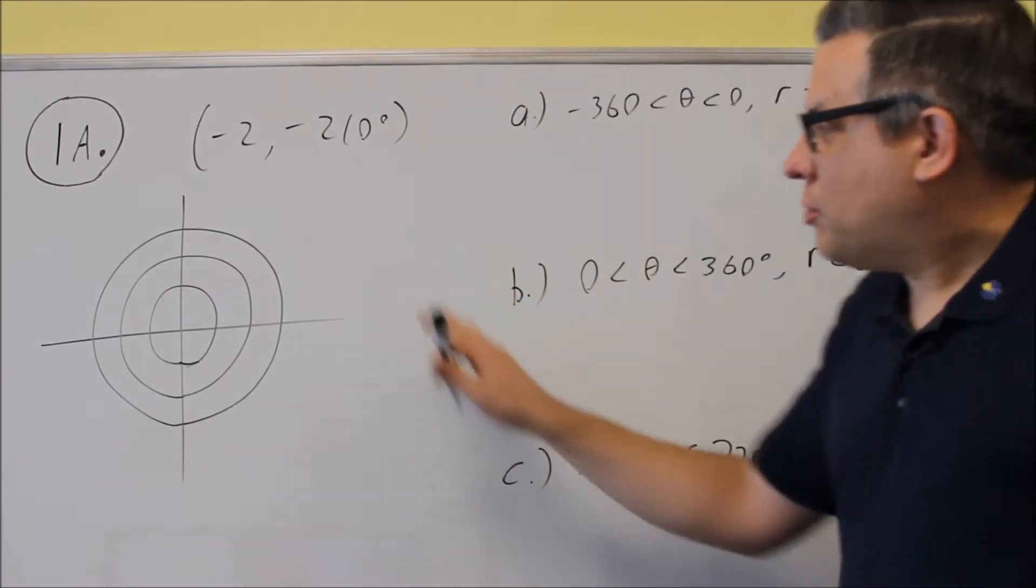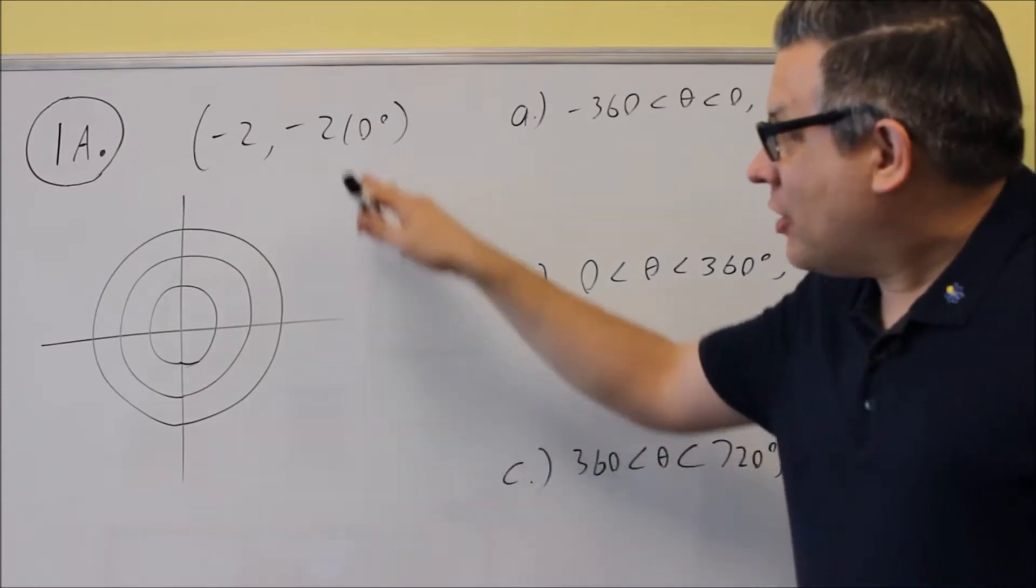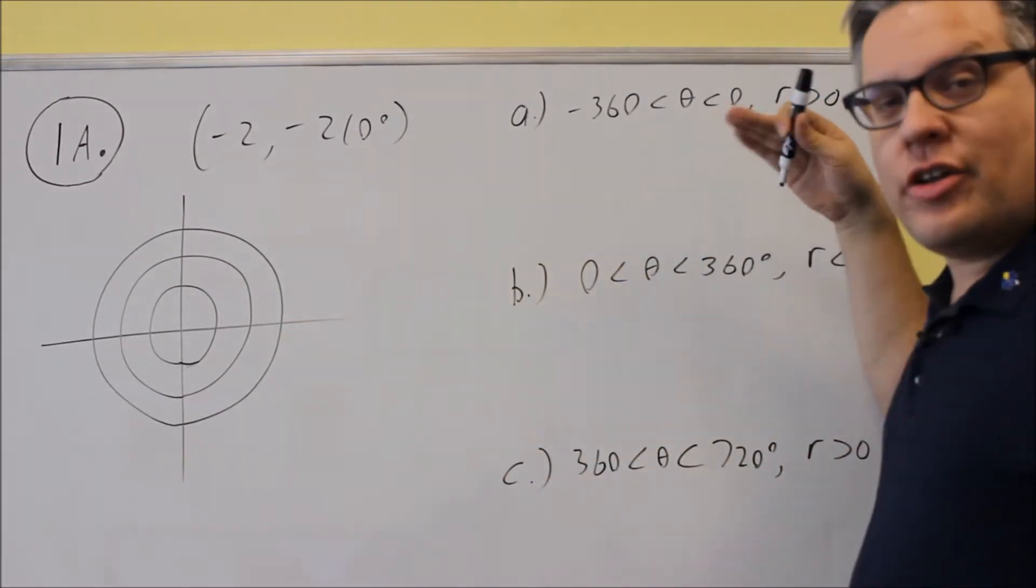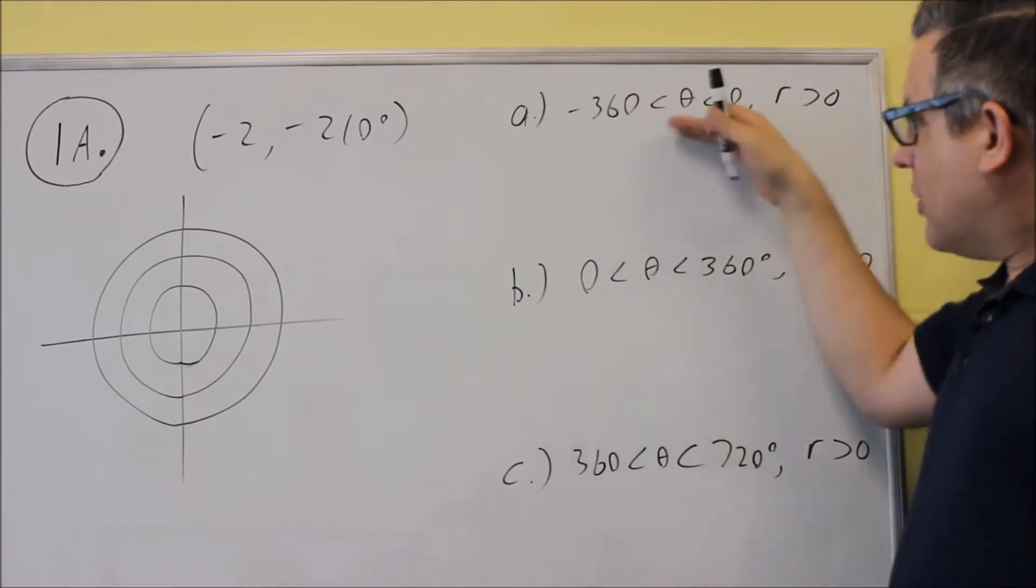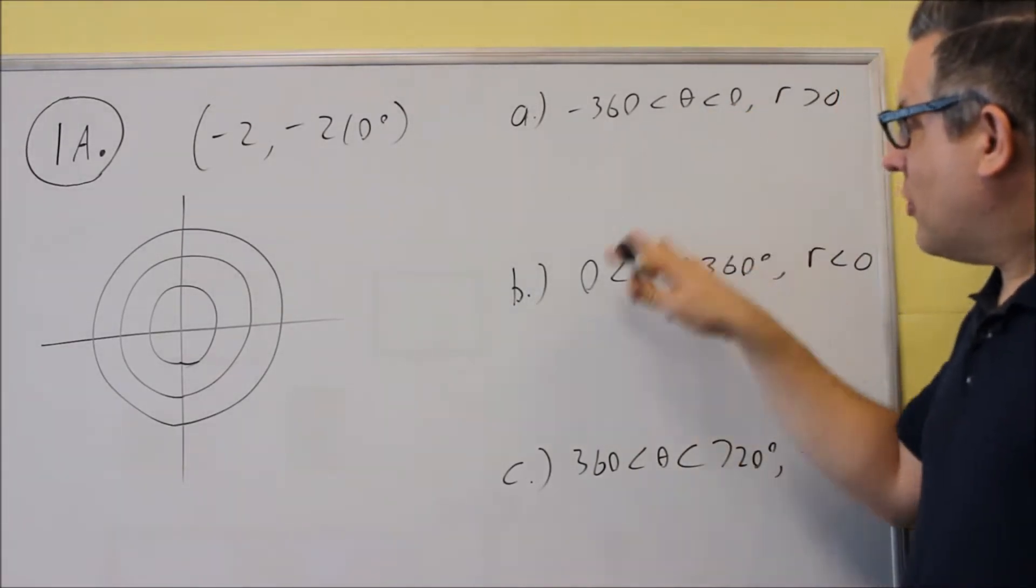For this question, you're going to be provided a polar grid like this one, and they're going to give you a point to plot, and then you want to find an equivalent point, and these are the same three things that you would see on the actual test. So we have these different conditions.